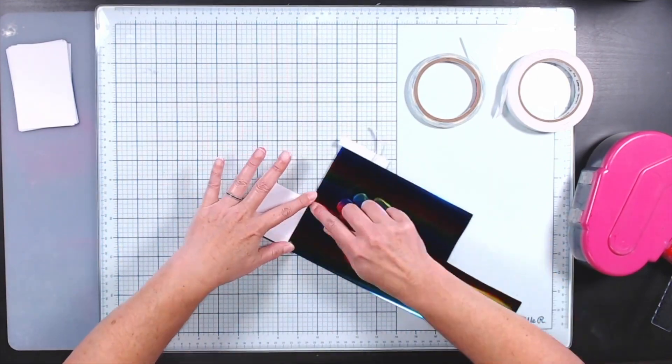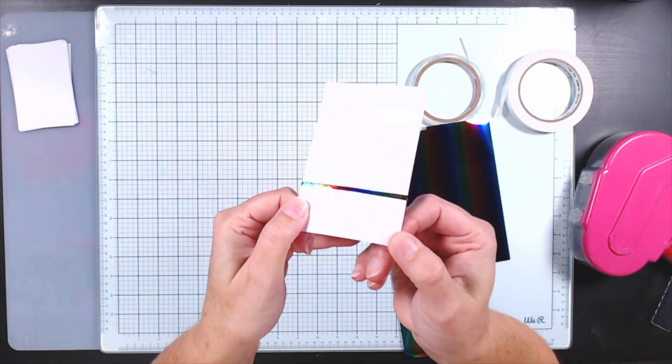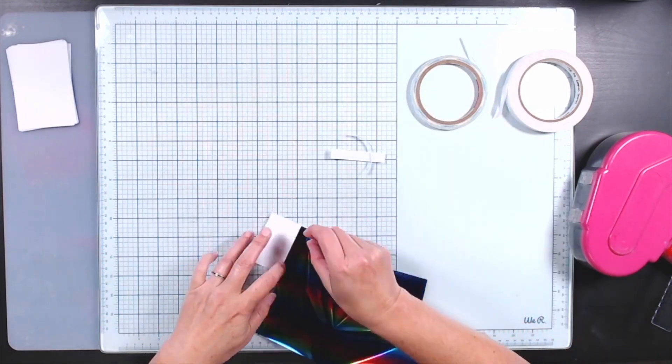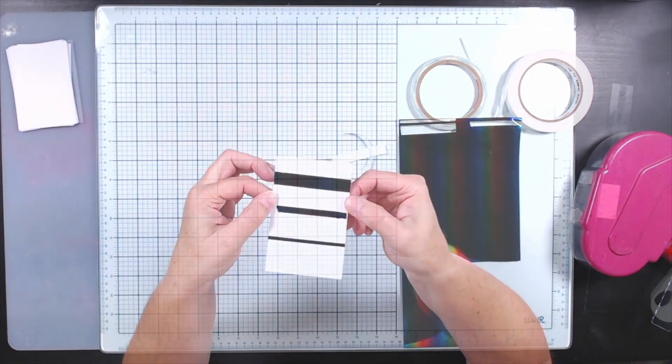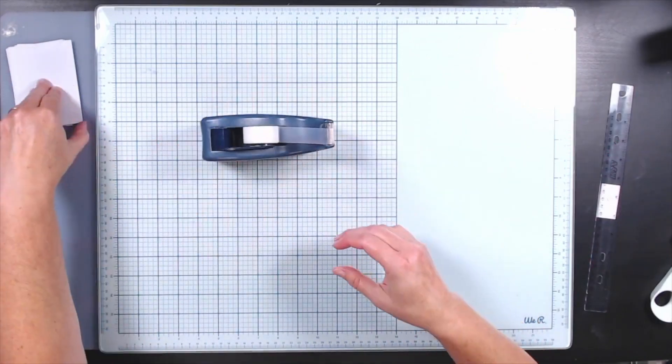Now here's a case where the foil has a directionality to it, so you have to pay attention to which way you want the colors of your foil to end up. Now here's a tip that may surprise you.